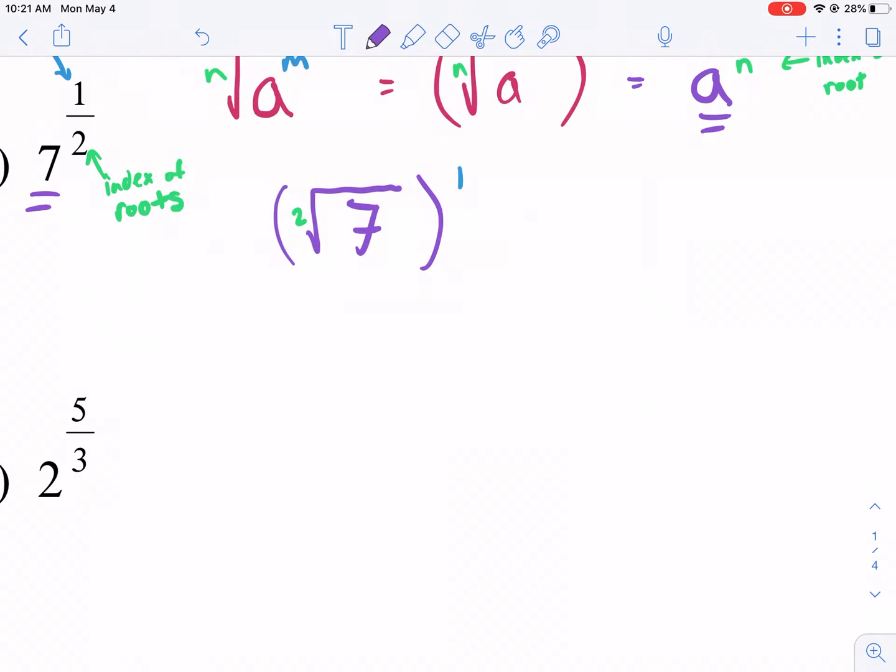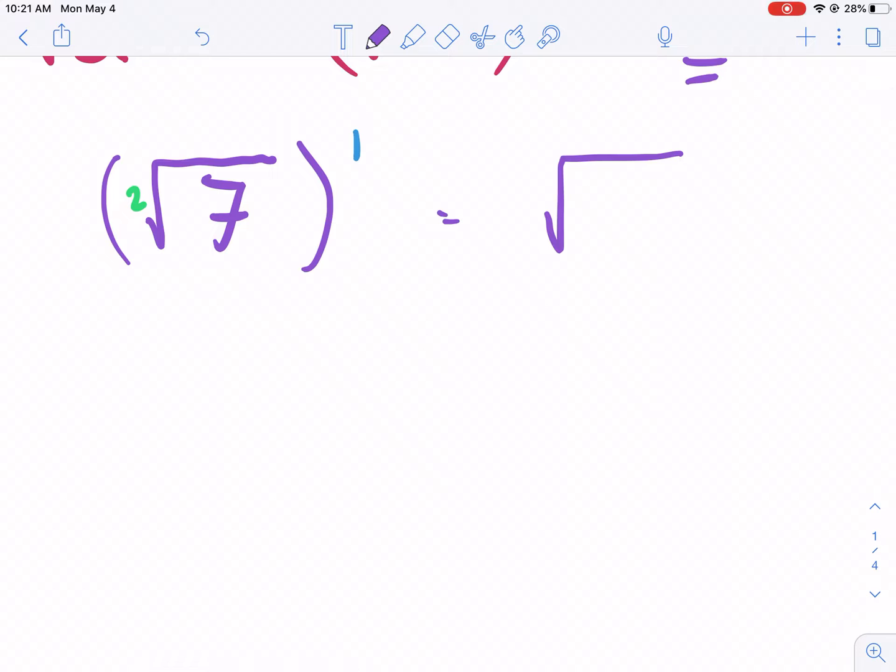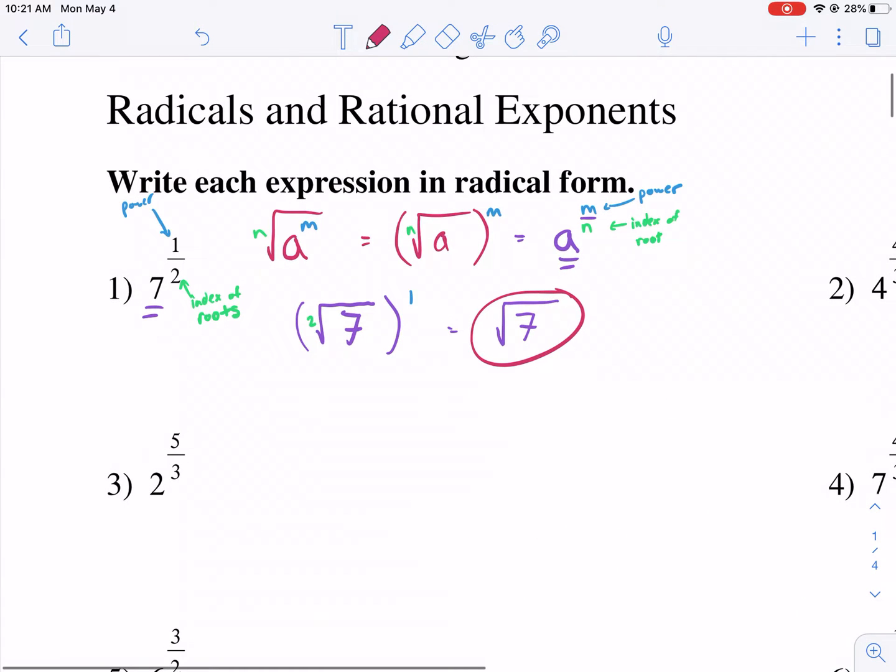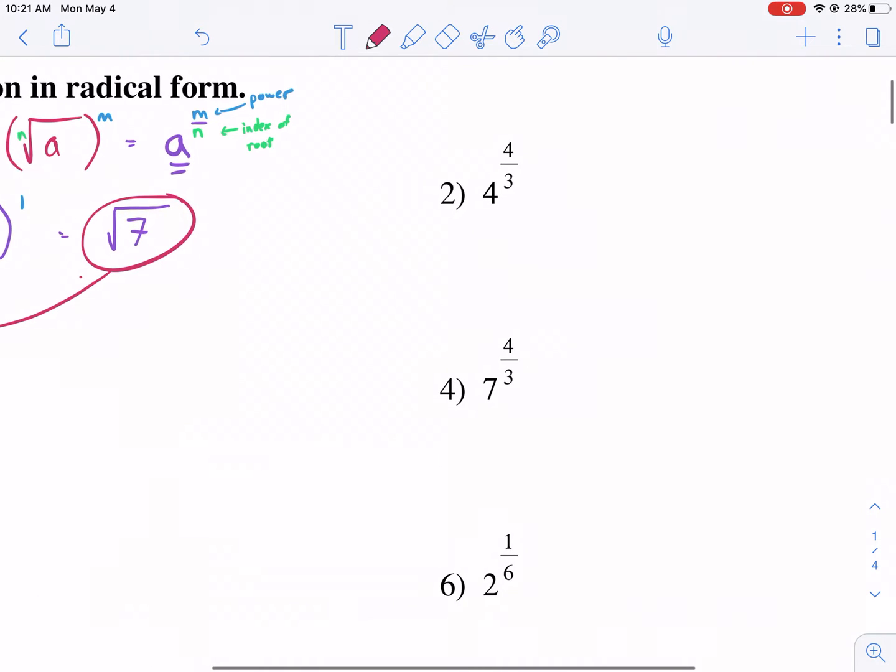If we raise something to the power of one, it doesn't change the value at all. So we can just kind of get rid of that. And the second thing is the square root, or the second root, we don't need to write the two there. There's an implied two within the square root. So we can just go ahead and write this for our final answer. So these two are equal. Those are equal expressions. One is in exponent form and one is in radical form.